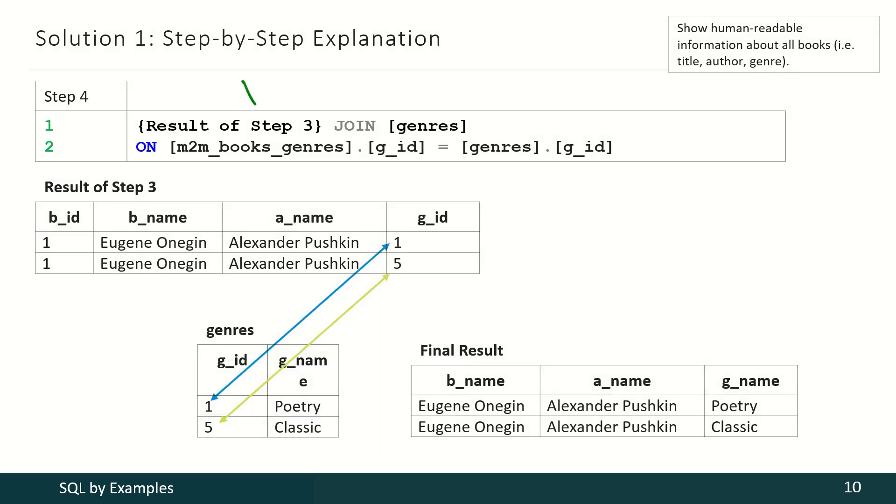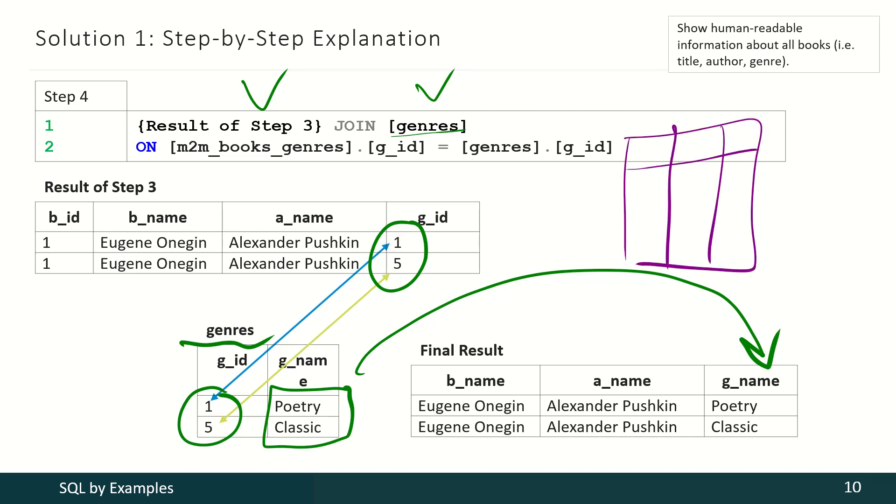And with the final step, we are joining the third temporary result with information from the genres table. So the DBMS looks for these identifiers here and for these identifiers here. Then it selects this information and produces our final result. And of course, the DBMS repeats all those steps for all books, so that's how we get our big table for all our books, for all our genres, and for all our authors.